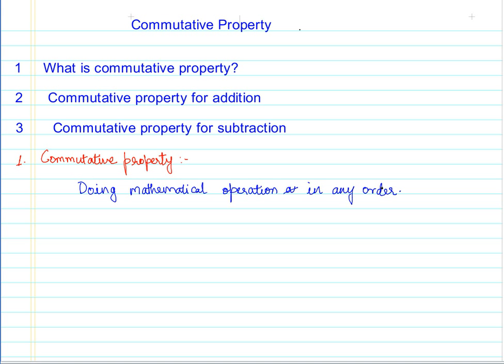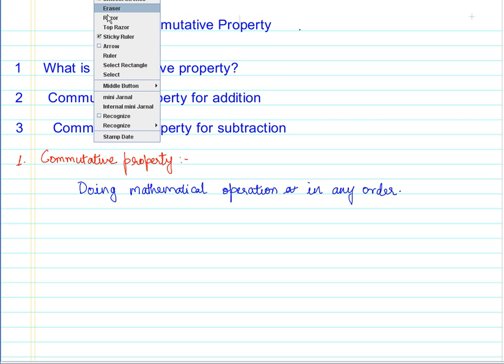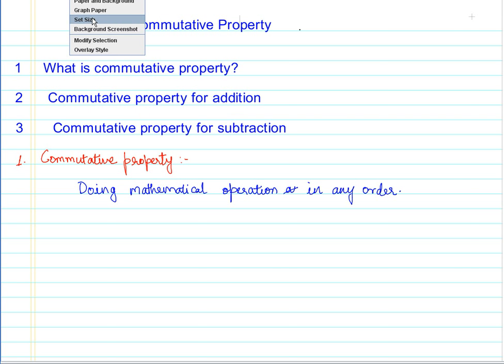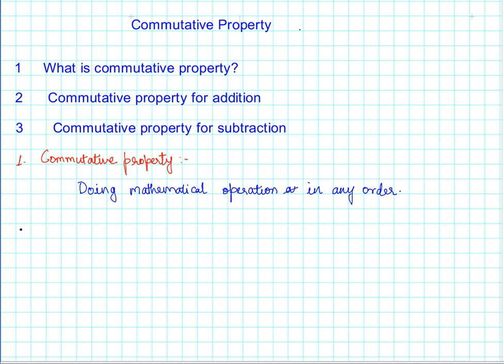Having said that, let me take an example and with that you will be able to understand it clearly. We will straight away discuss the commutative property for addition. Before we do that, let me change this paper to a graph paper. Now our second discussion is we will be checking the commutative property for addition.